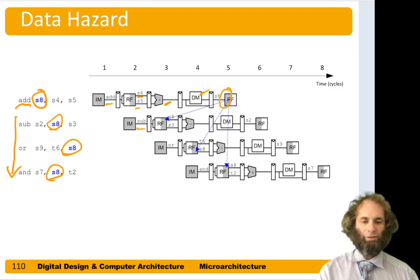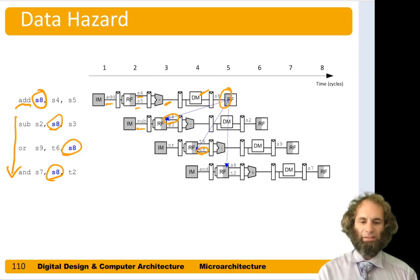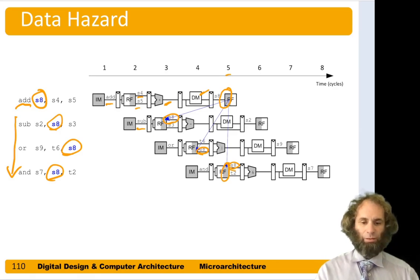Now the subtract comes along — fetch it in step 2. In step 3 the subtract tries to read the value of S8 from the register file, but it's the old S8, not the result of the add, which doesn't get written until step 5. In step 4 we try to read S8 for the OR, and again this is the wrong value. Finally, for the AND in step 5, we read S8 and since we wrote it in the first half of the cycle and read it in the second half, we do get the proper S8. So the AND works, but the subtract and OR produced the wrong answer — this is a data hazard.